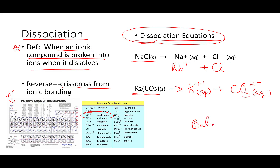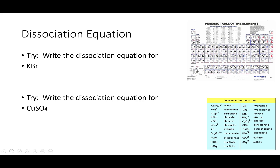We also have to balance those equations. We have two potassiums here, so we're going to need two potassiums there. Hit pause and try doing this with potassium bromide, then we'll go through it together. Potassium is group one, so positive one; bromine is a group 17, negative-one ion. So if we have this solid and put it in water, it will dissociate into a positive-one aqueous potassium ion plus bromine negative-one aqueous, and we end up with one bromine and one potassium — we're all good.